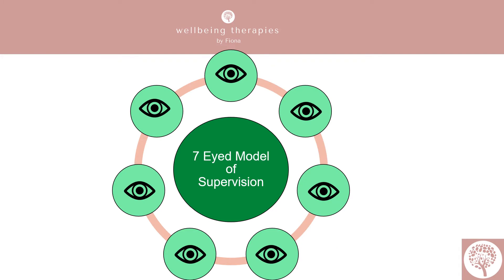This is the seven-eyed model of supervision. This model is normally covered in more advanced counselling skills courses, but I wish I had learned about it much earlier in my career because it would have helped me understand the importance of supervision. It's called the seven-eyed supervisor model and it was developed by Peter Hawkins and Robin Shohet in 1985. I'm going to explain each element of the seven-eyed model in turn.